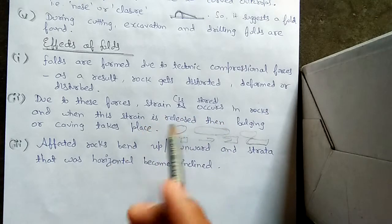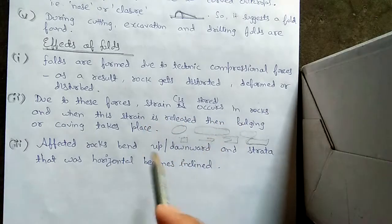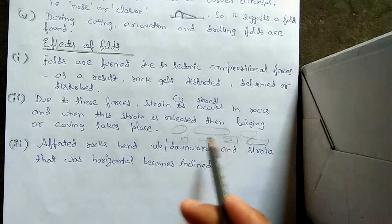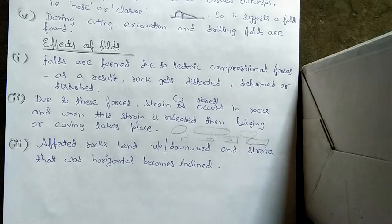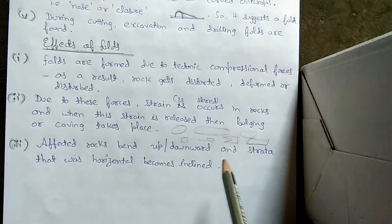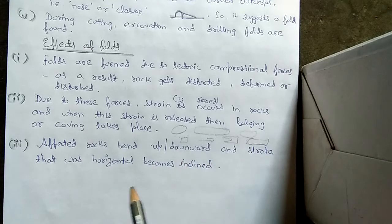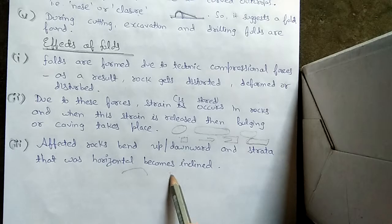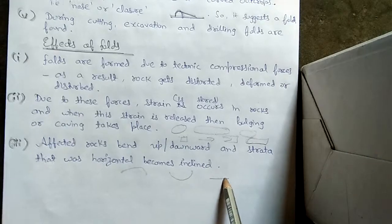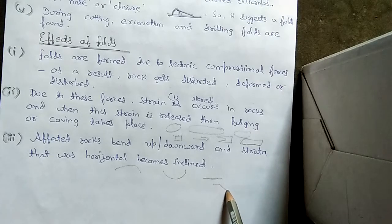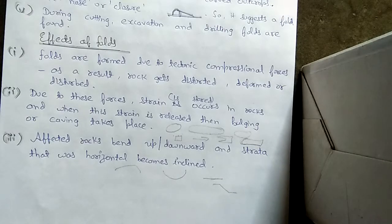Due to the forces, strain is stored in the rocks. When strain is stored, then caving takes place. When stress is released, bulging takes place. The last one is affected rocks bend upwards or downwards, and the rock strata that was originally horizontal becomes inclined. This is what it is saying. Notes.